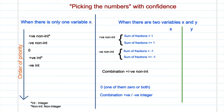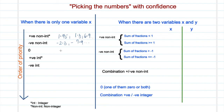If you are given one variable x with nothing else specified, here is the order of priority I suggest for picking values. Start with positive non-integer values, for example 1.75, 1.3, 6.9. Then pick negative non-integer values like −2.3, −7.9. Then consider 0, some positive integers, and some negative integers. Usually by the time you get to 0, you should have a good understanding of where the problem is going.